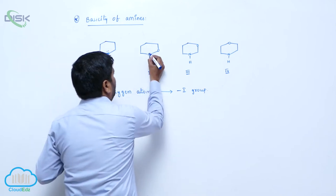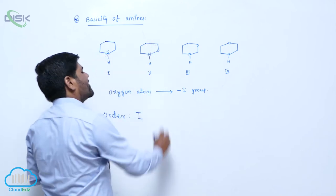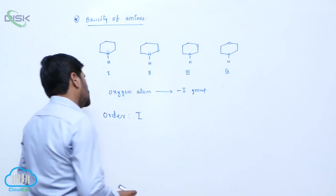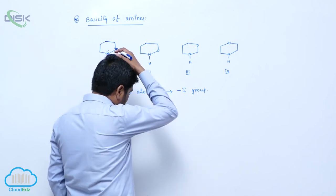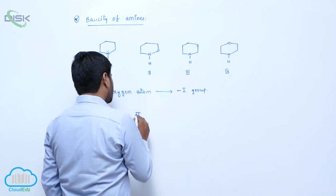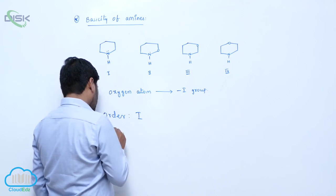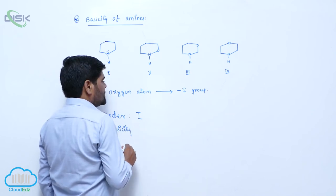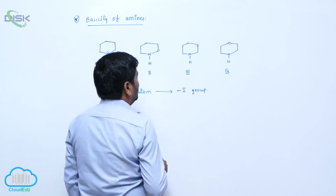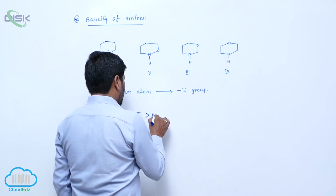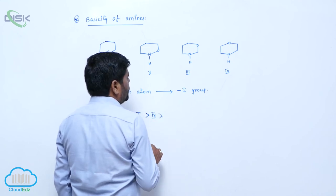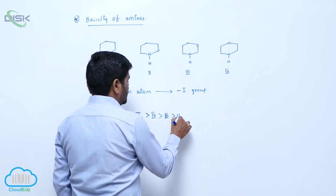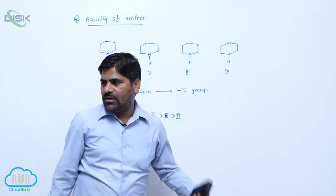So, therefore, the order of basicity of these amines is: first greater than fourth, fourth greater than third, third greater than second.